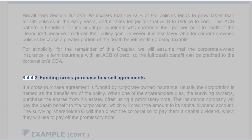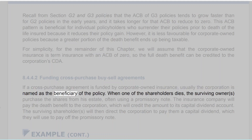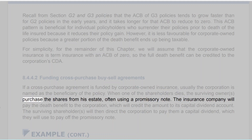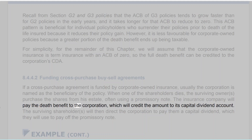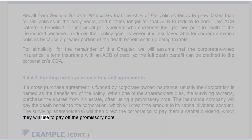8.4.4.2 Funding Cross-Purchase Buy-Sell Agreements. If a cross-purchase agreement is funded by corporate-owned insurance, usually the corporation is named as the beneficiary of the policy. When one of the shareholders dies, the surviving owners purchase the shares from his estate, often using a promissory note. The insurance company will pay the death benefit to the corporation, which will credit the amount to its capital dividend account. The surviving shareholders will then direct the corporation to pay them a capital dividend, which they will use to pay off the promissory note.